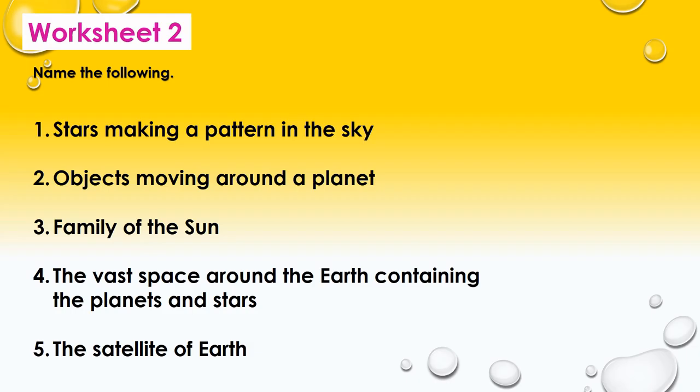Moving to Worksheet 2: Name the following. The first one is stars making a pattern in the sky—it's called a constellation. Going to the second one: Objects moving around a planet—the answer is satellites.